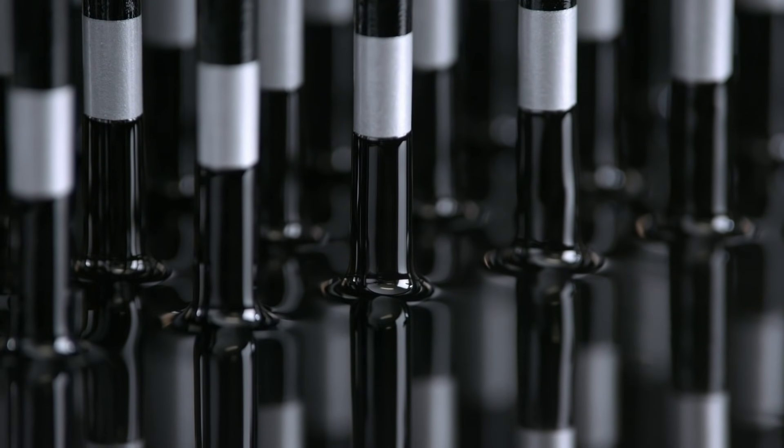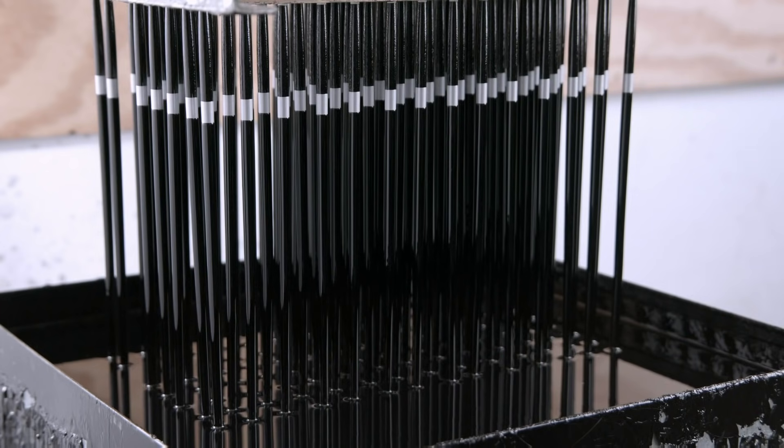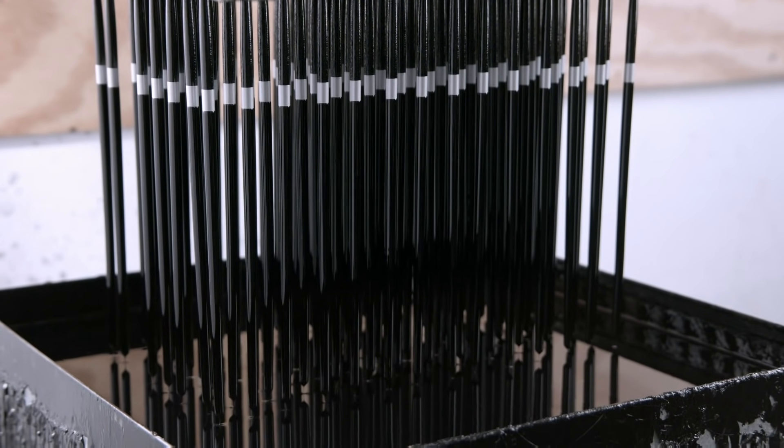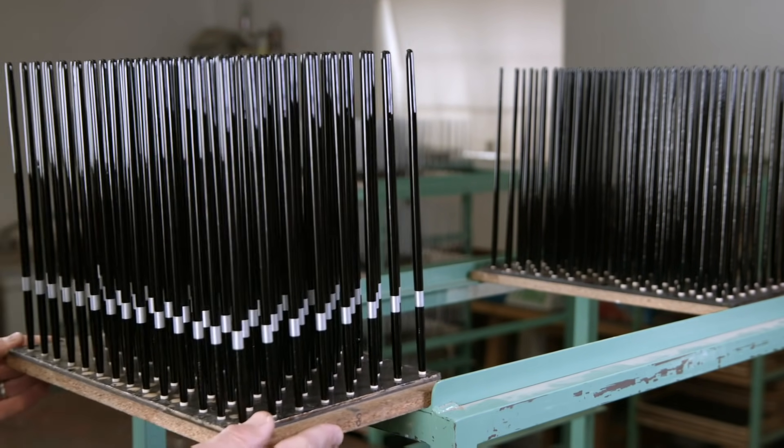After another day of drying, a third dip, this time partially back into black paint, creating a black handle with a silver stripe.